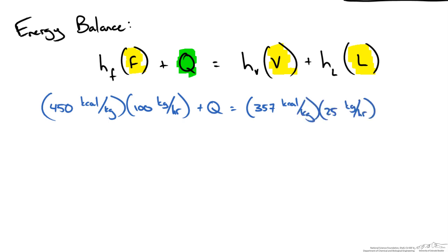This is going to be plus our enthalpy of 67 kcal per kg. Again these are specific enthalpies of our streams times our flow rate. When we do this and solve for Q I get negative 31,050 kcal per hour. So that is the amount of energy we would need to remove from the stream.